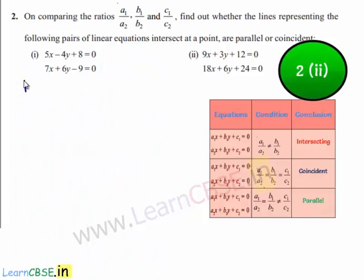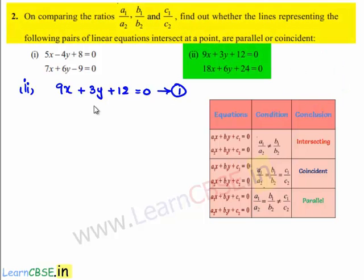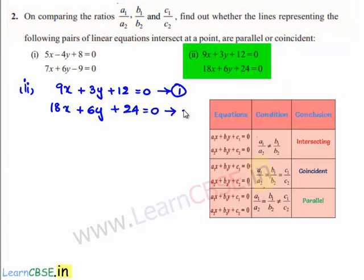Coming to the second bit, the given set of linear equations are 9x plus 3y plus 12 is equal to 0 — this is equation number 1 — and 18x plus 6y plus 24 is equal to 0 — this is equation number 2.